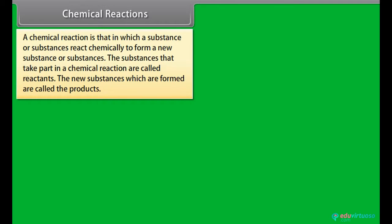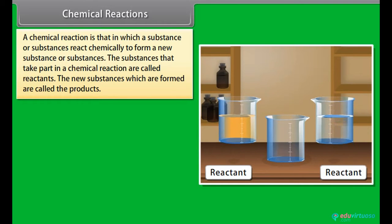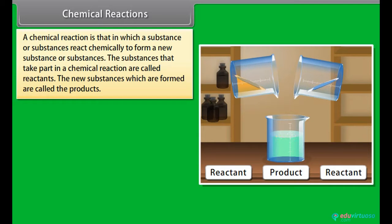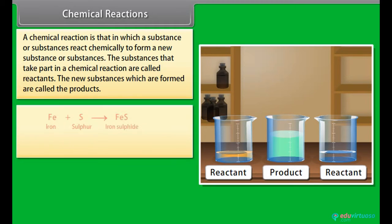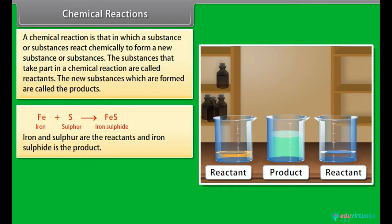Chemical reactions: A chemical reaction is that in which a substance or substances react chemically to form a new substance or substances. The substances that take part in a chemical reaction are called reactants. The new substances which are formed are called the products.